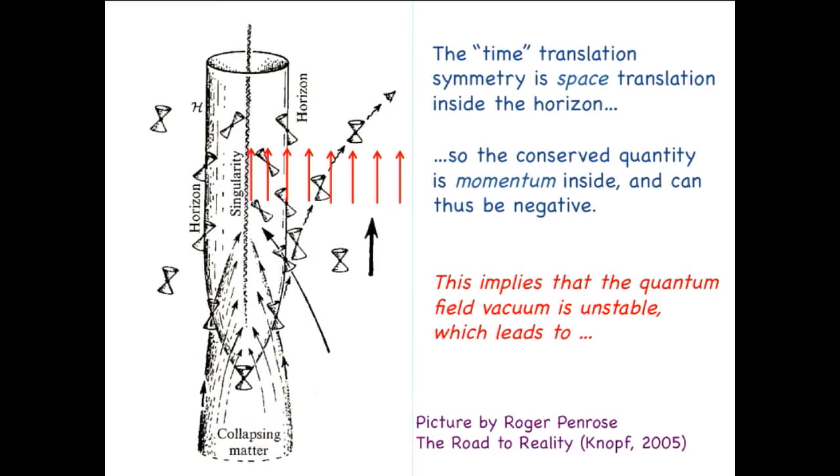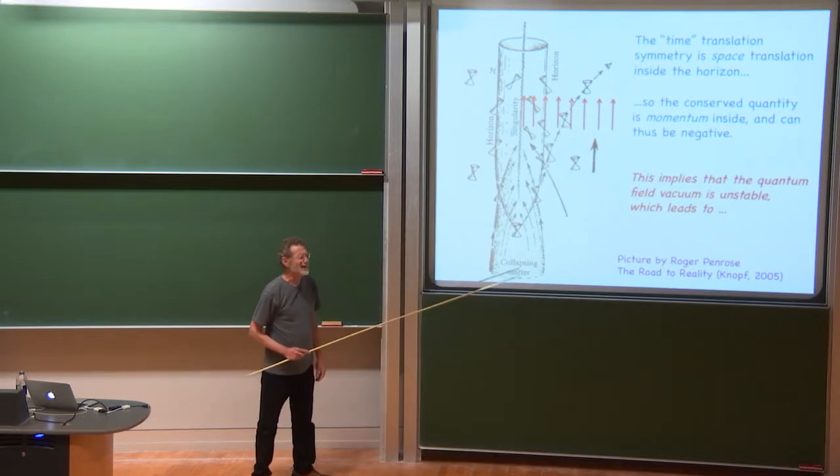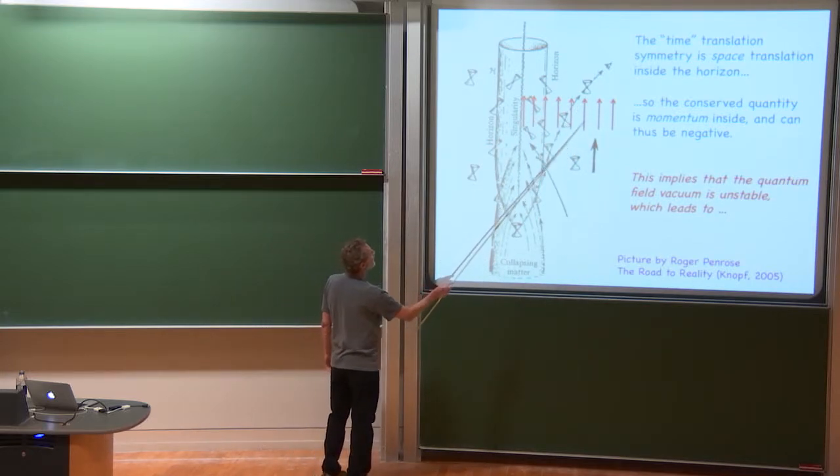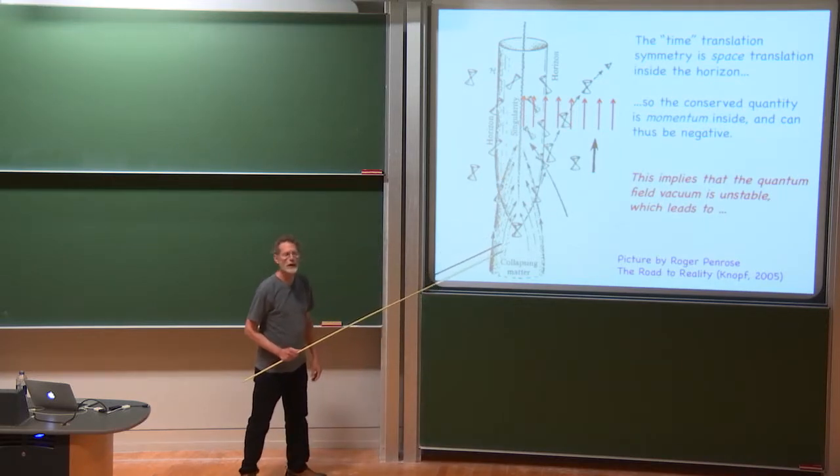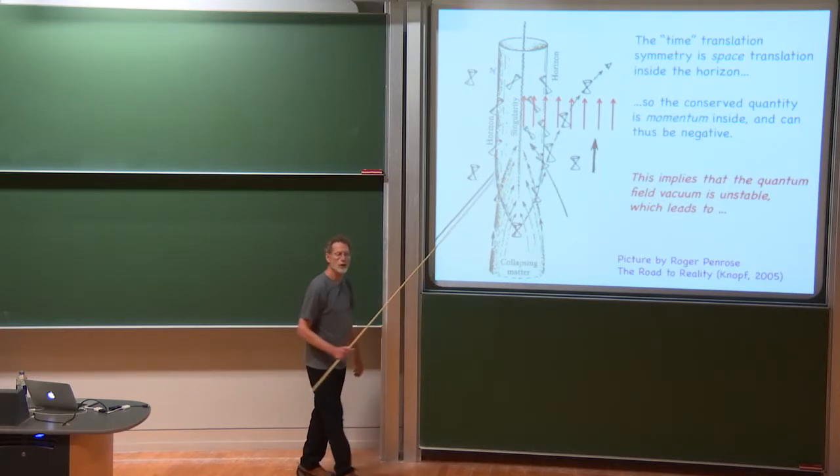I'll come back to that in a moment, but I just want to first explain where the instability that's associated with the Hawking radiation comes from. So once the black hole is formed, the spacetime has a time translation symmetry. And here's a vector field showing how to shift the diagram in that symmetry direction.